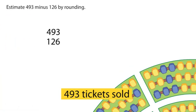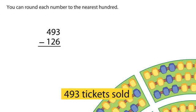Estimate 493 minus 126 by rounding. You can round each number to the nearest hundred.